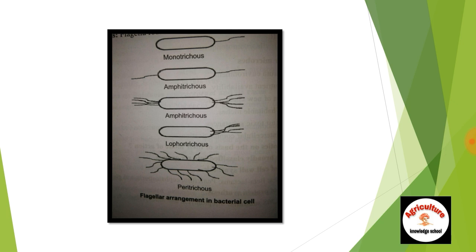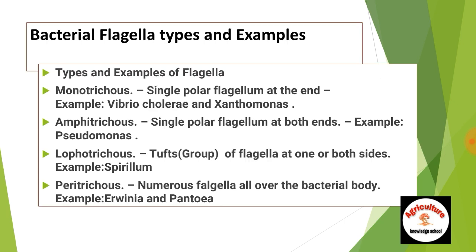To summarize: Monotrichous is one-ended flagella. Amphitrichous is two-ended flagella, or more than one flagellum at both sides. Lophotrichous is a tuft or group of flagella on one side. Peritrichous is flagella found all over the body of the bacterium.